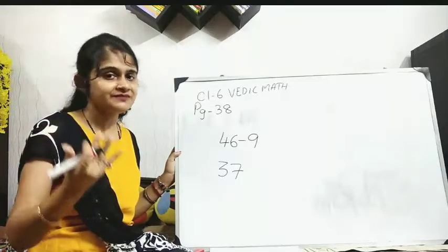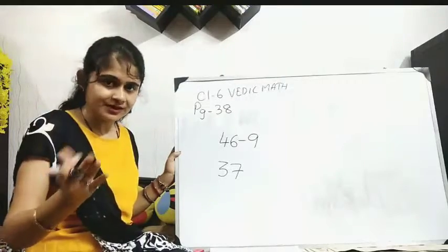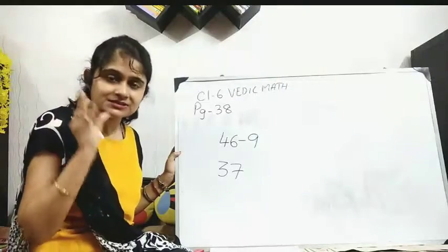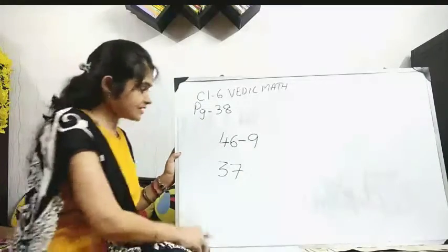5 plus 5? 10. 4 plus 6? 6 plus 4? Whatever, 10. Okay? So you are using these complements to find out your subtraction process. Clear? Next one.